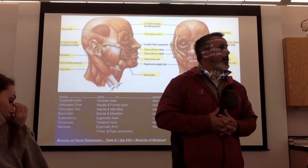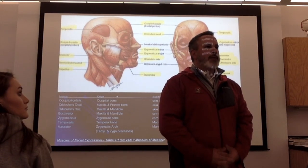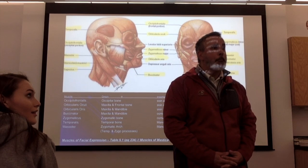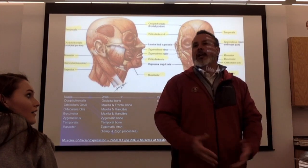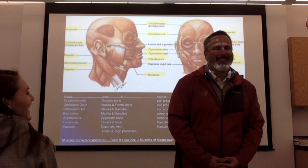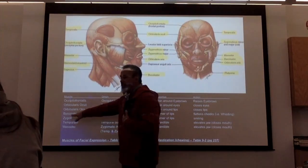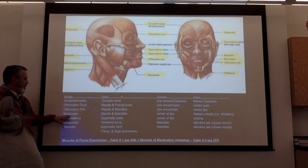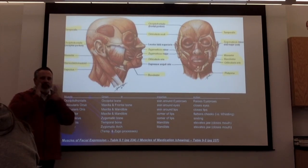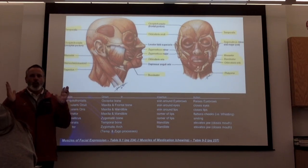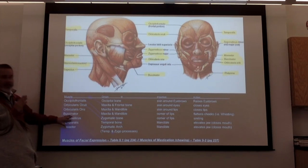If I was asking about the orbicularis oris on the exam, I'd say which muscle does this — look at my face, from here to here. The buccinator — it's not the lips exactly, but what it does is it flattens your cheeks, like when you whistle. That's what the buccinator does.